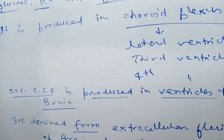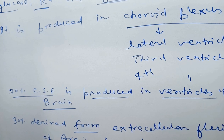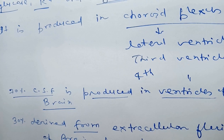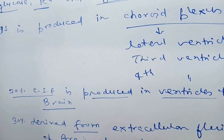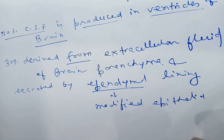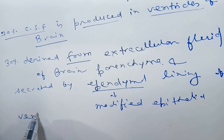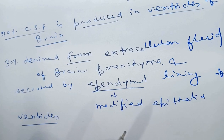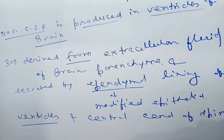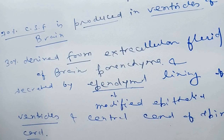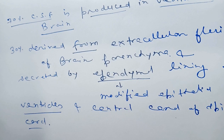The remaining 30% is secreted by the ependymal lining, which is the modified epithelium of the ventricles and also of the central canal of the spinal cord. In the spinal cord, this central canal is present running through it.